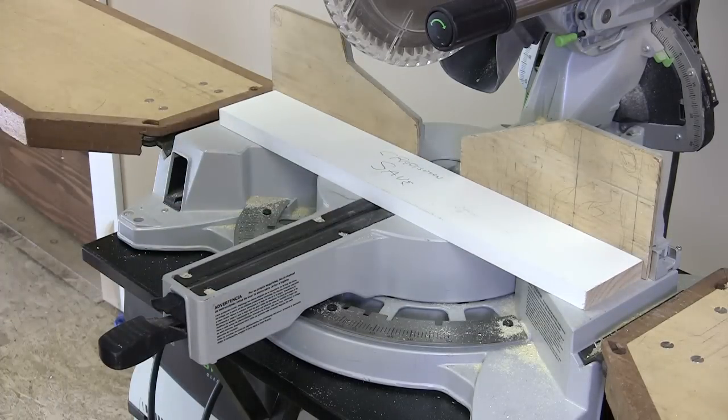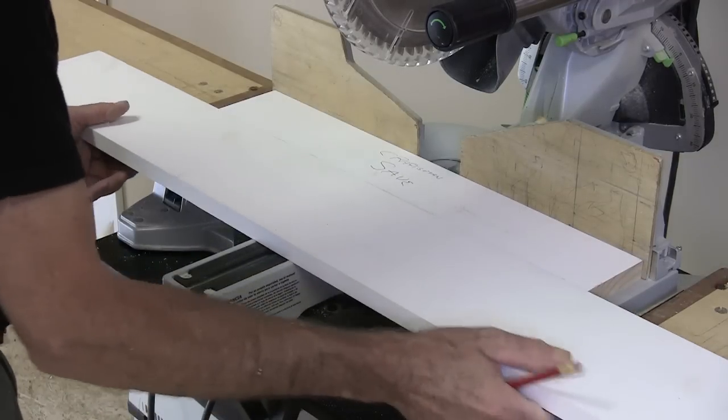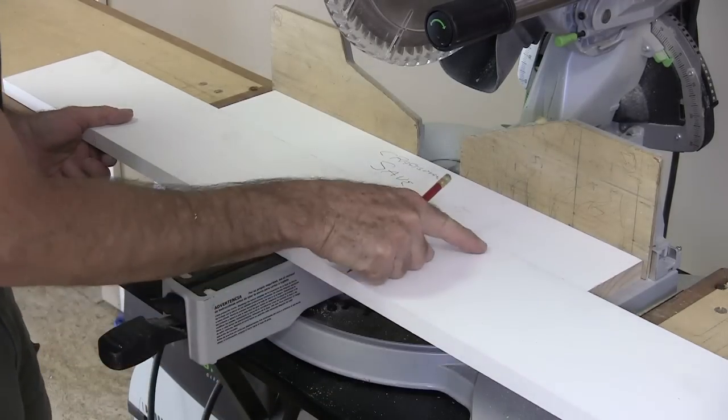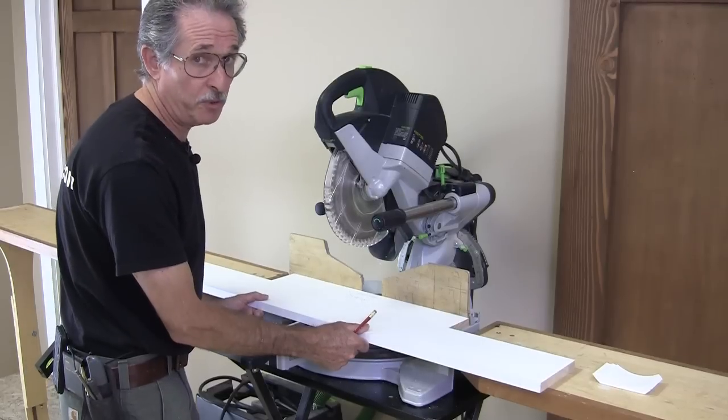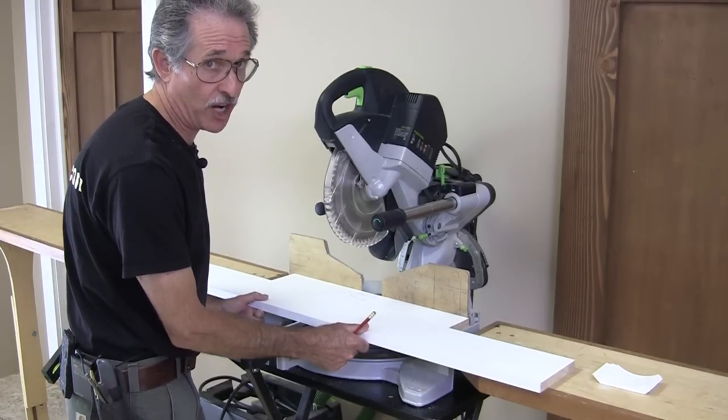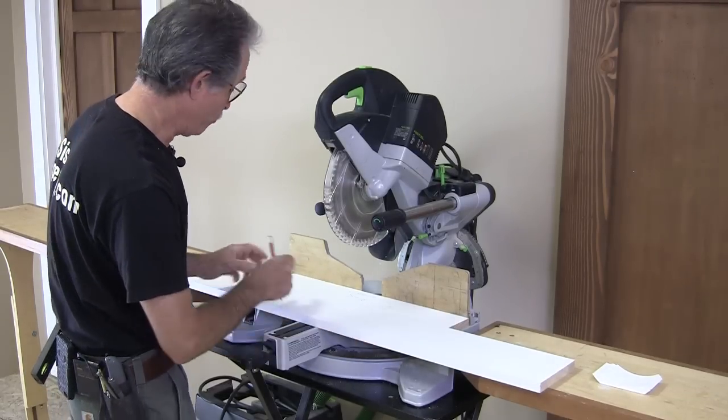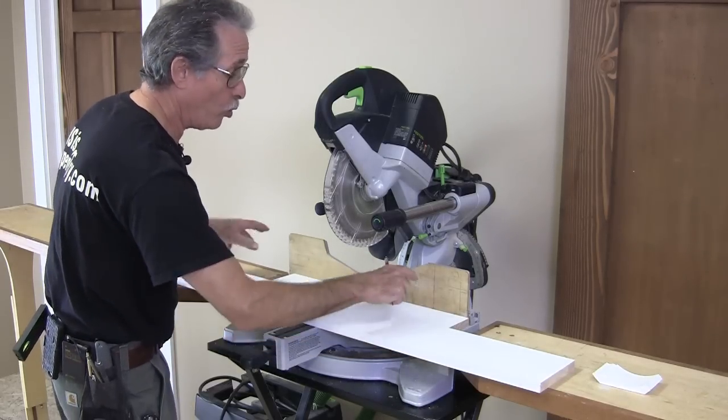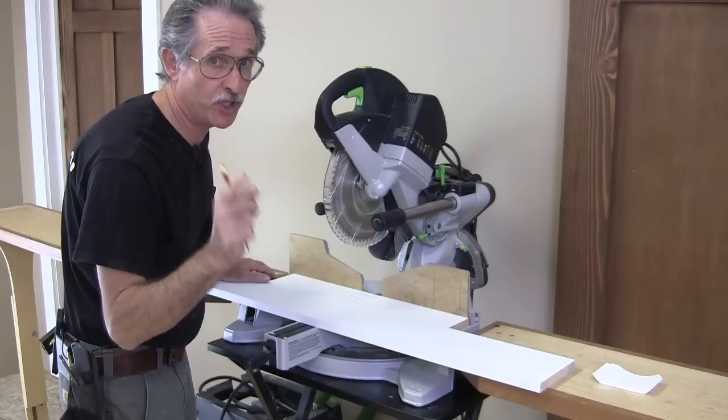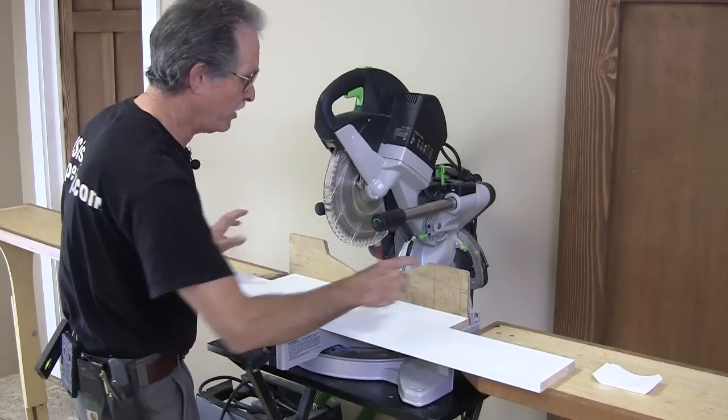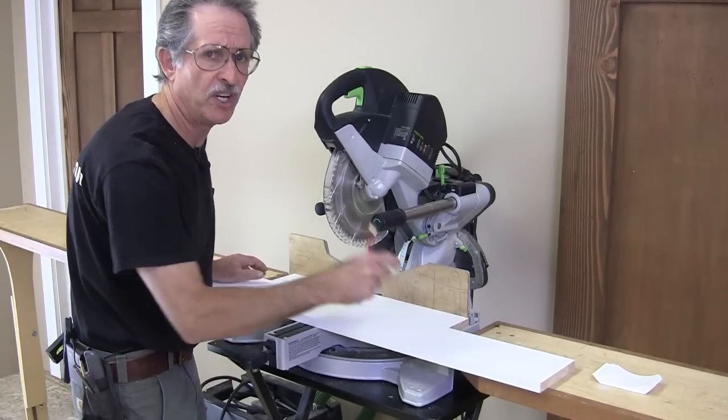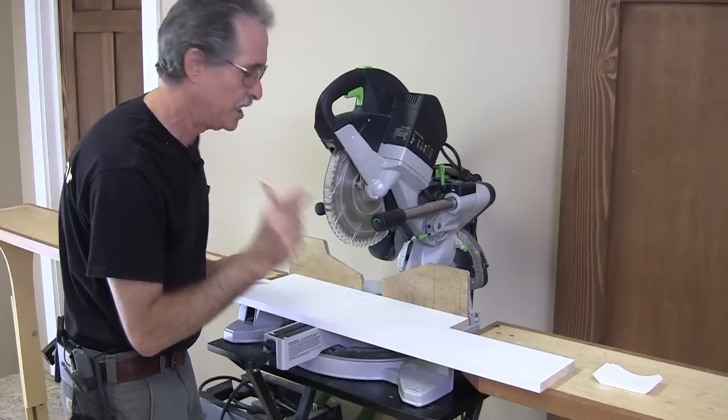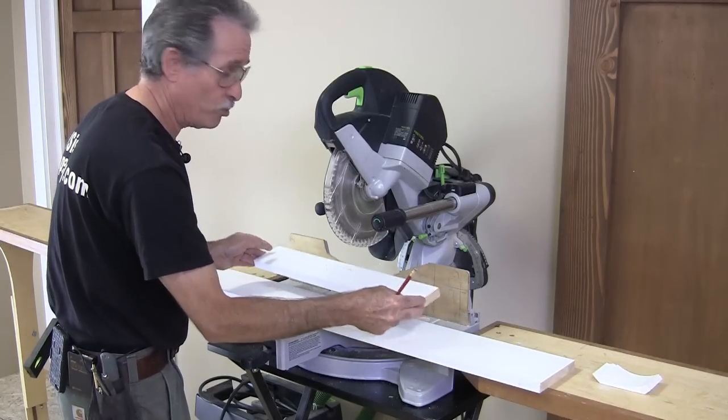And then I'm going to take a continuous crown stop made out of a piece of one by six. You really want to have a continuous crown stop when you're cutting crown. Not just one that's over on this side or one that's on that side. You want it to be able to hold that crown at the same projection, the same spring angle, no matter how long the piece of crown is, even if it's a little short piece. And this gauge block is really the way to go.